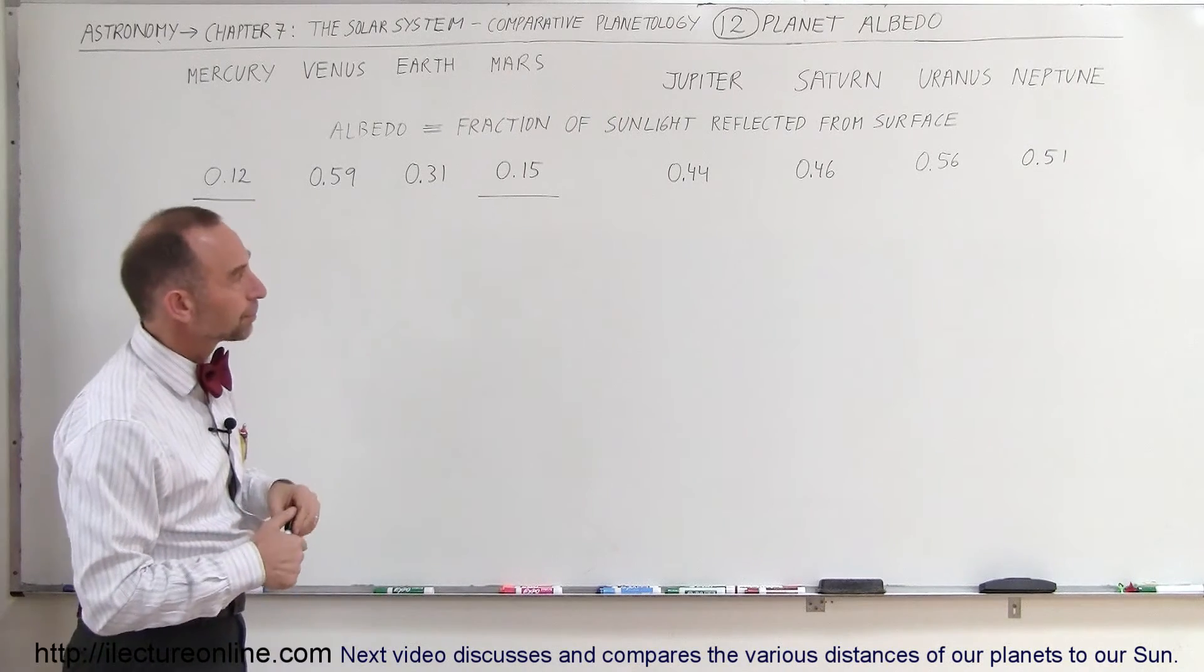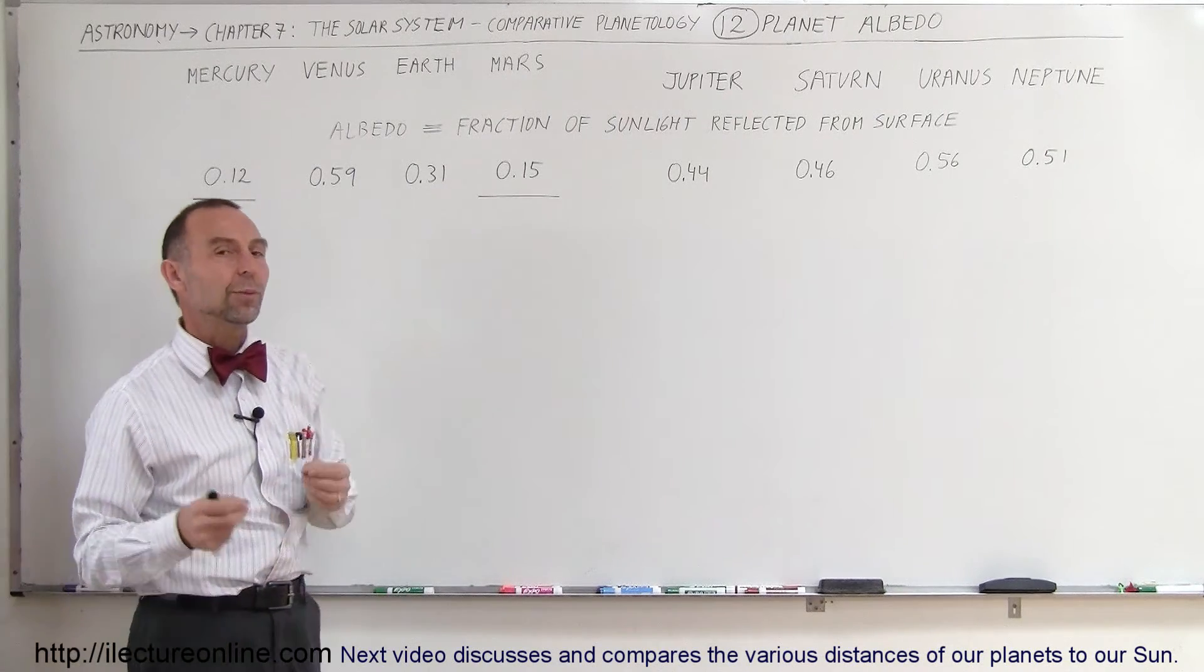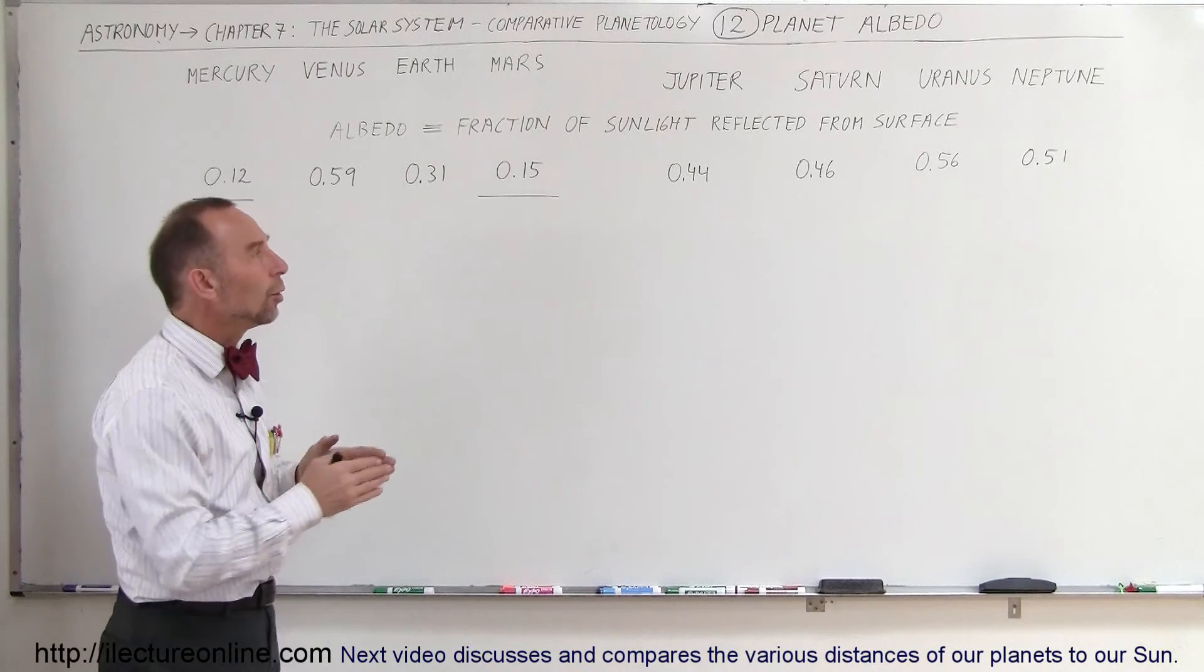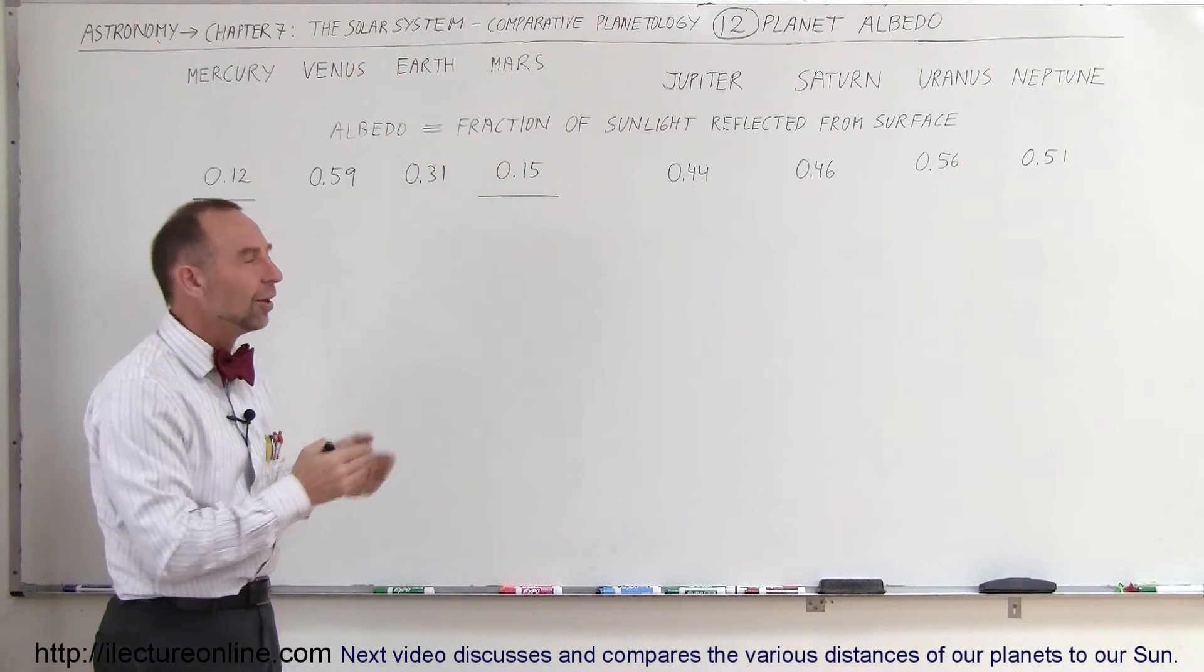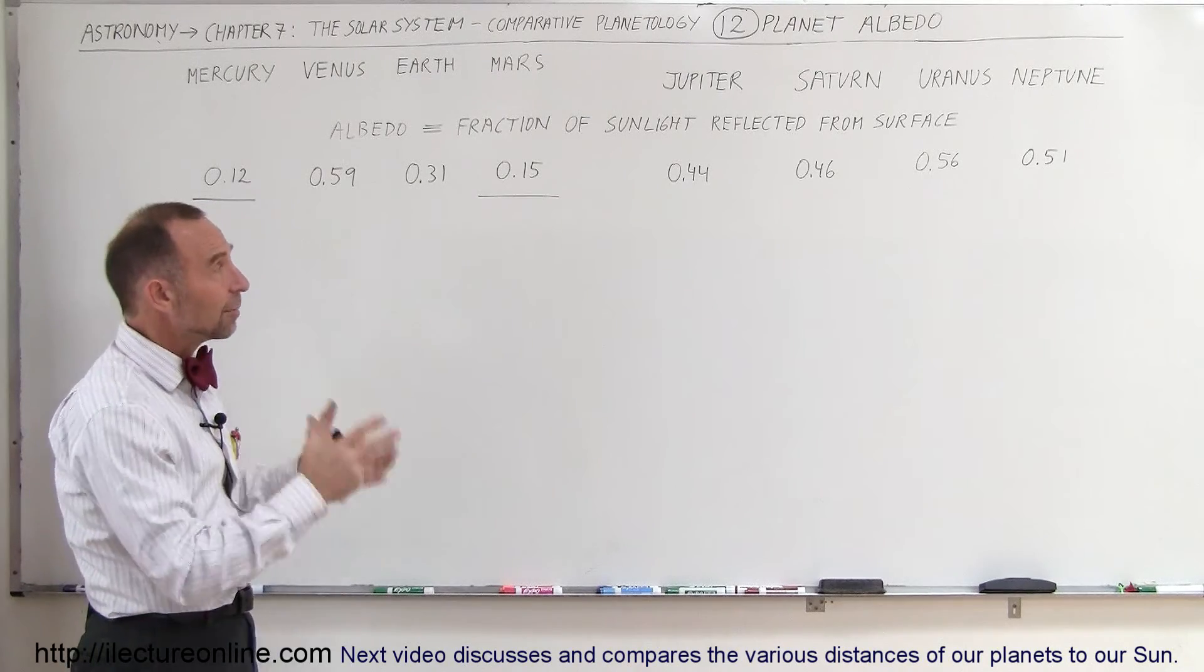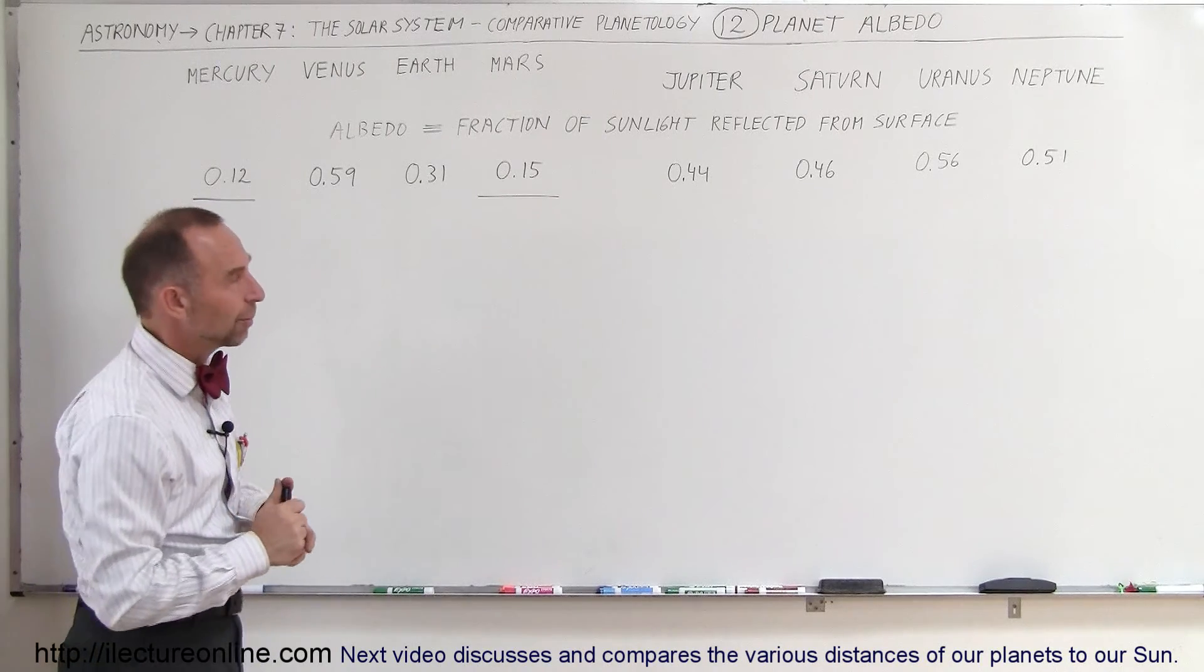Of course, it has to do with the consistency of the atmosphere, and when we start talking about the individual planets, we'll talk a little bit more about why exactly the albedo is the number that it is when we get down into the actual molecular structure and the makeup of the various atmospheres of the planets.